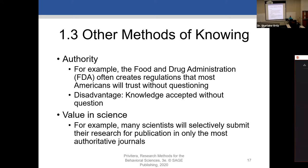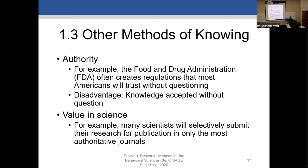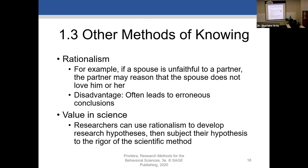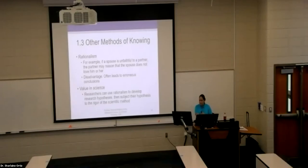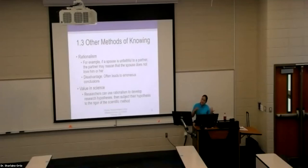Parents are also a method of knowing through authority. When we're children, we take what our parents say at face value. If my parents told me when I was a little girl that the sky is purple, I would have no reason to doubt them until I started growing up and getting evidence from other sources of knowing. So learning from parents can be seen as a method of knowing through authority.